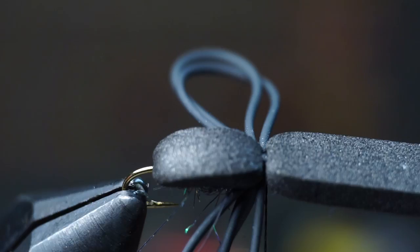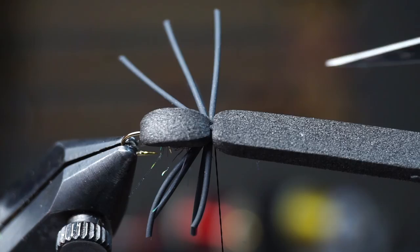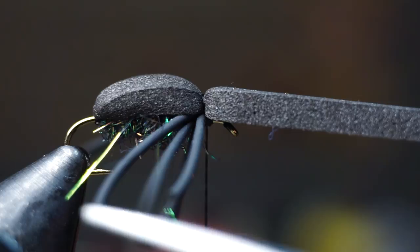Now you can trim your legs. Cut the loops first, creating 4 separate legs on each side. Then cut the legs to length. I generally like to keep them about the same length as the beetle's body.